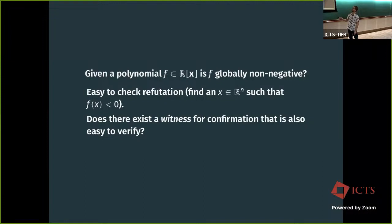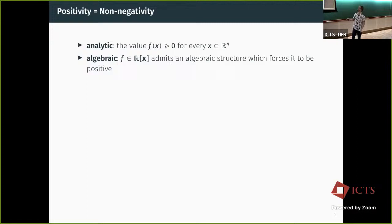The question is: does there exist a witness that is also easy to verify, and that will prove to us that this polynomial is positive — non-negative? I'm going to use positivity and non-negativity as synonyms.